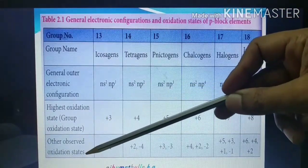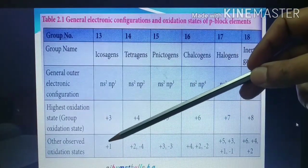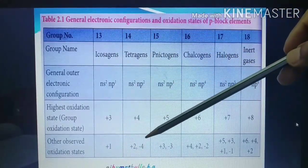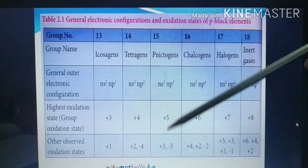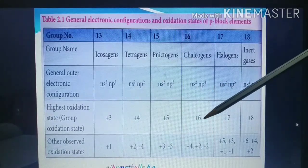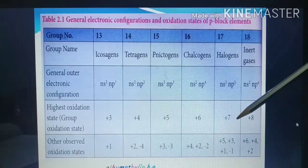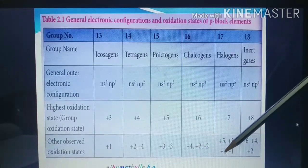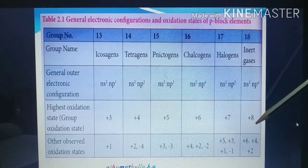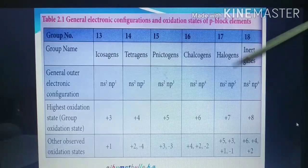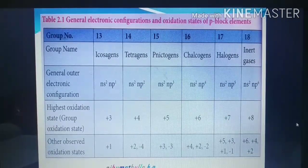Other observed oxidation states are also possible due to the inert pair effect. For example, elements in Group 14 can show +4 and +2; Group 16 shows +6 and −2; Group 17 shows +7 and +1; Group 15 shows +5, +3, and −3. These are the general electronic configurations and oxidation states of P-Block elements.